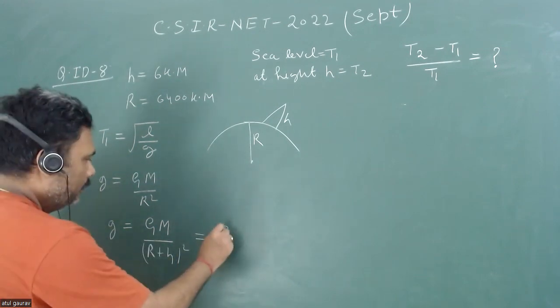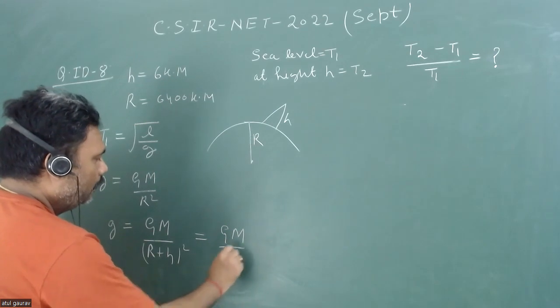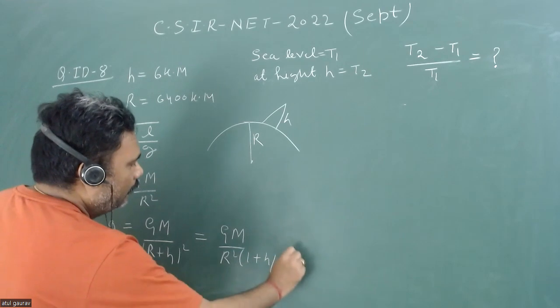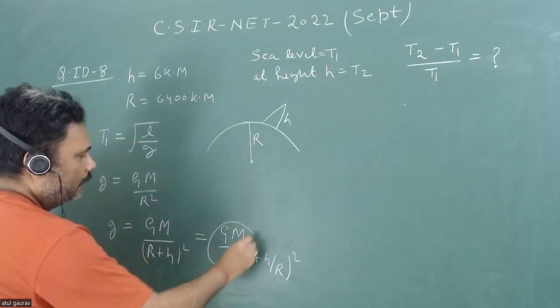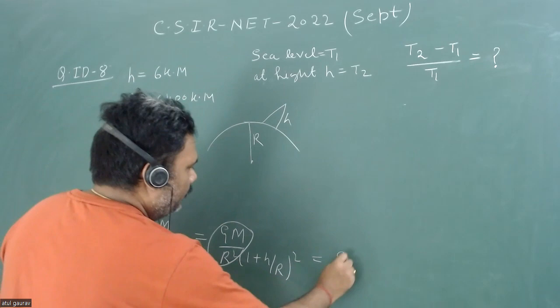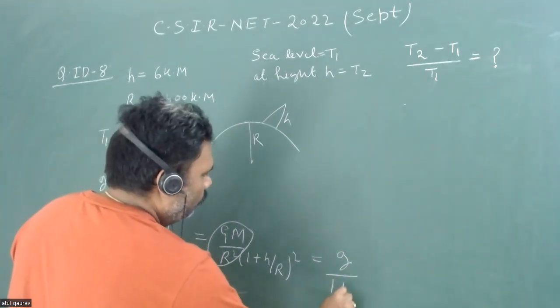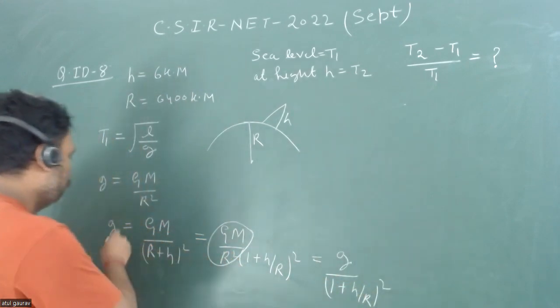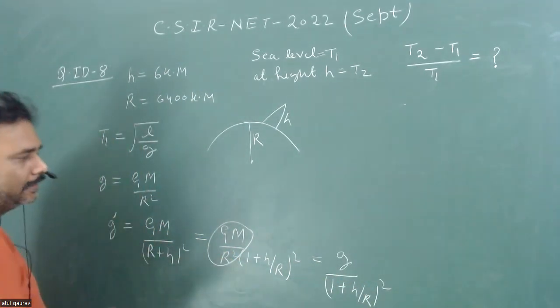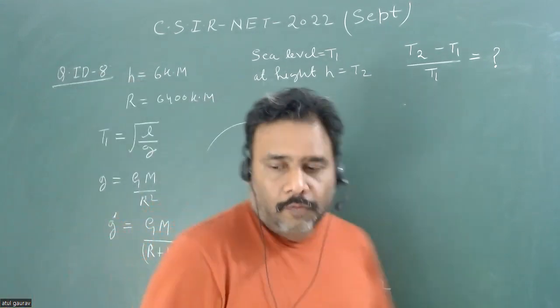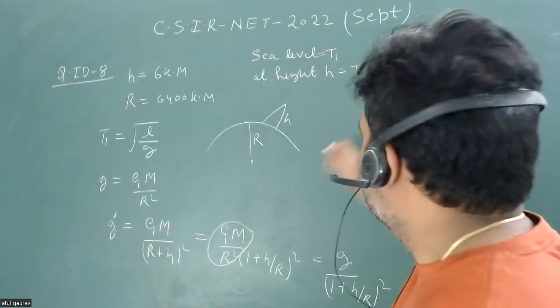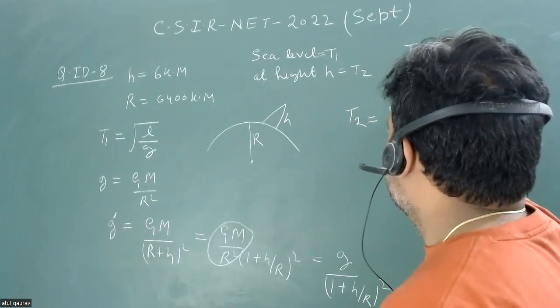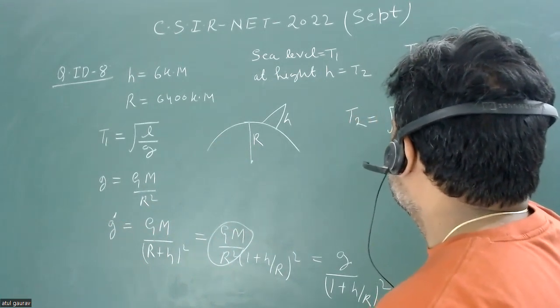This is nothing but we can write g upon (1+h/r) whole square, and this is nothing but g dash. We all know that t1 is root under l upon g, so similarly t2 is given by root under l upon g dash.